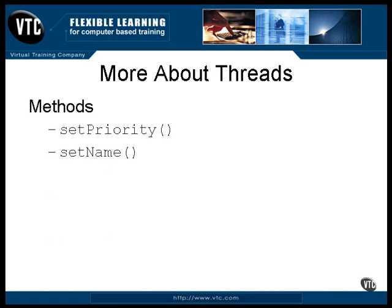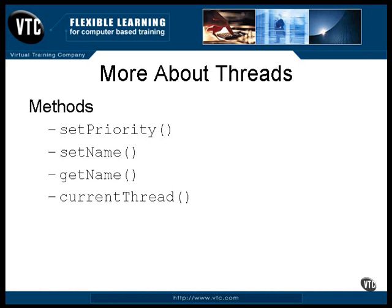You can set the name of a thread either by using the setName method or by specifying a name on the constructor of the thread object. The getName method will retrieve the name of the thread. In a multi-threaded system, it is quite useful to include the thread name in error reports and logging. The currentThread method is a static method that returns a reference to whichever thread is currently executing — you could, for example, put the current thread to sleep or call one of its methods.